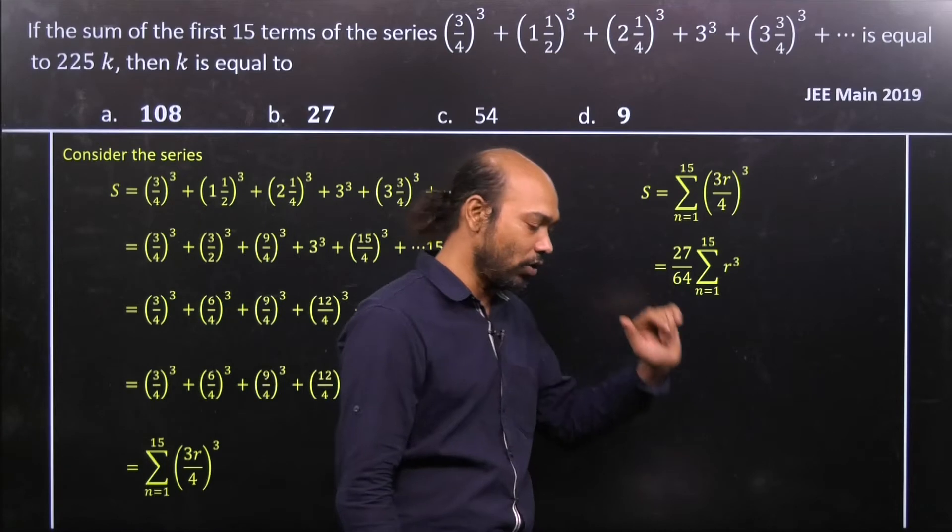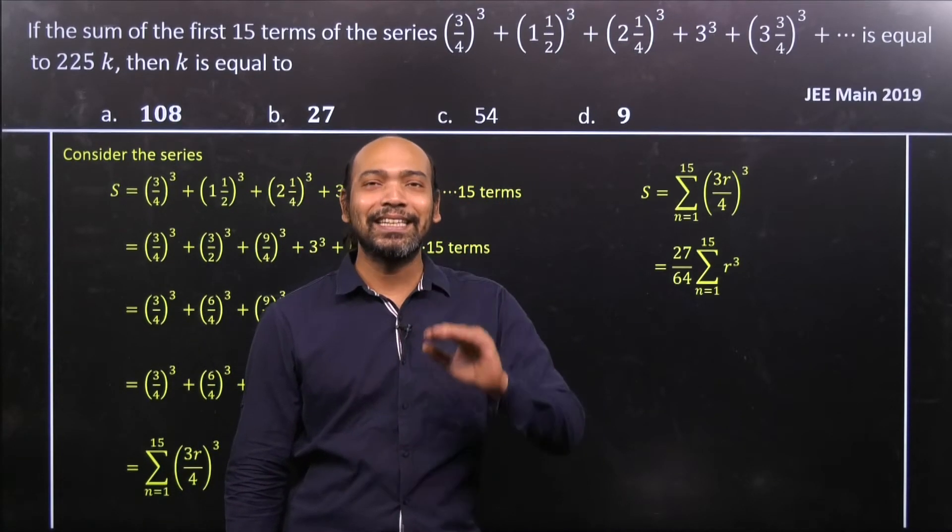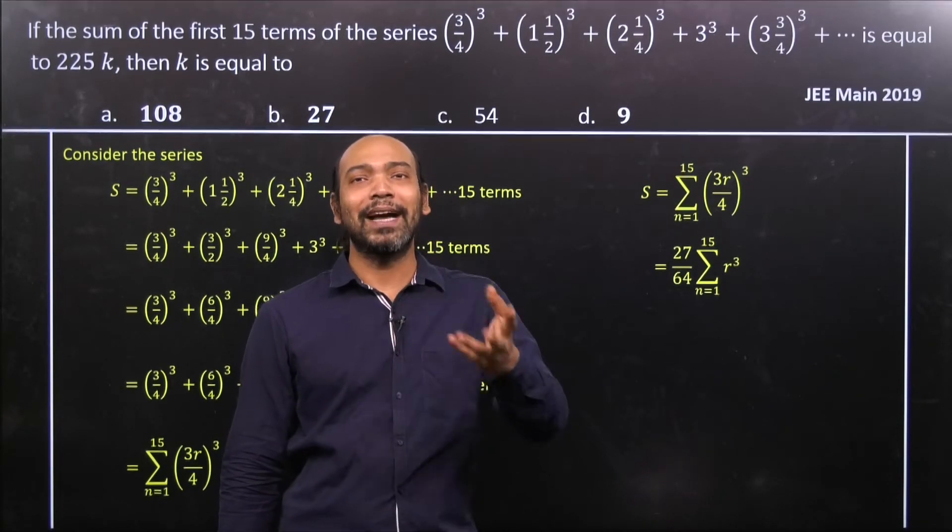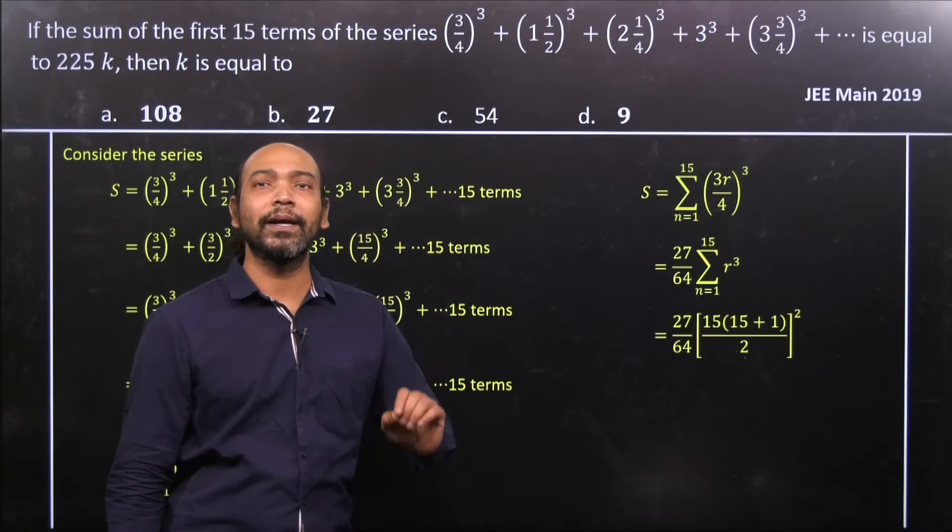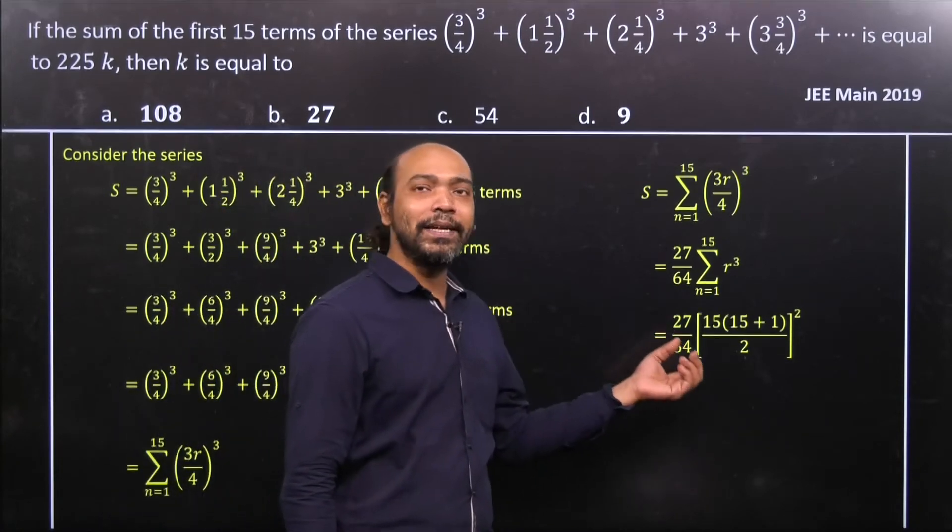Now what is summation r³, n equal to 1 to 15? That gives you sum of first 15 cube natural numbers. So that formula gives you [n(n+1)/2]². Here n is equal to 15, so 15 times (15+1) divided by 2, whole squared.